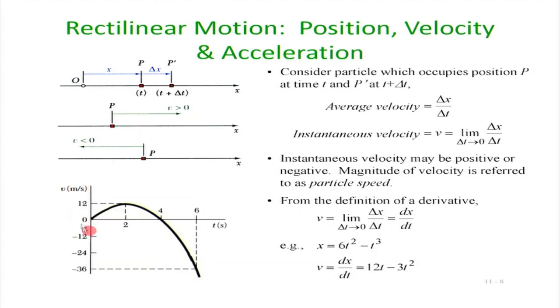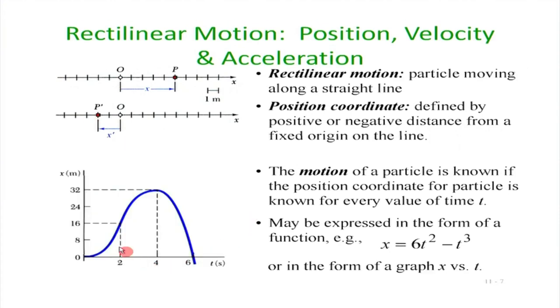Velocity is just dx/dt. If position x is a function of time, then velocity is the derivative of x with respect to time — for example, if x = 6t² − t³, then v = 12t − 3t². The derivative dx/dt is nothing but the slope of the position-time curve. If the slope is high, velocity is high; if the slope is positive, velocity is positive and to the right; if slope is 0, velocity is 0; if slope is negative, velocity is in the opposite direction.